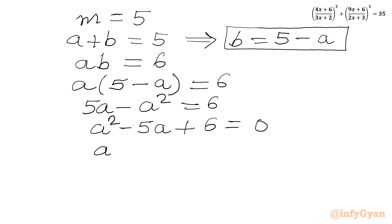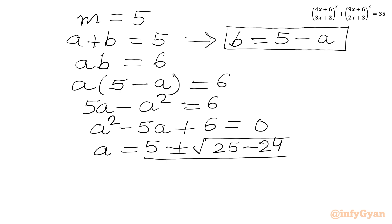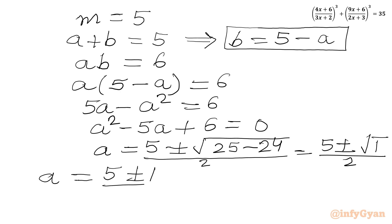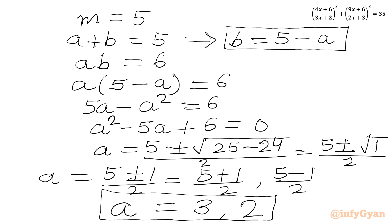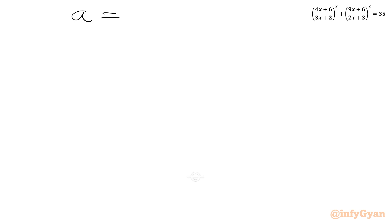Using the quadratic formula: a equals (5 plus or minus square root of (25 minus 4 times 1 times 6)) over 2, which is (5 plus or minus square root of 1) over 2, giving (5 plus or minus 1) over 2. So a equals 6 over 2 which is 3, or a equals 4 over 2 which is 2. We have two a values: 3 and 2.